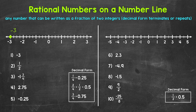Next, for number two, we have one half, which is positive, so we are going to be to the right of zero. One half is going to be in between zero and one. We have one fourth, two fourths — which is one half — and then three fourths. So this is one half right here.